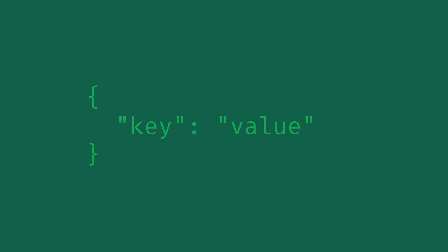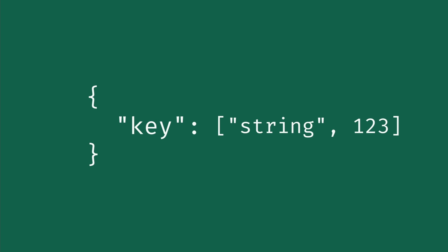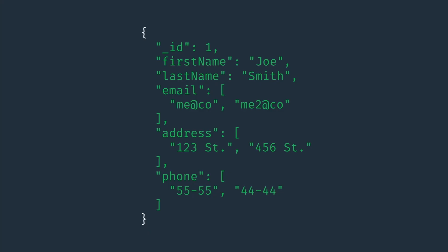If you're familiar with JavaScript objects, then you're going to be right at home with NoSQL data structures. JSON is structured as objects containing key-value pairs. We define an object with curly braces. Then our key is surrounded by quotes, and our value is separated from the key by a colon. The value can be a string surrounded by quotes, a number without quotes, arrays of values using square brackets, or even another object.